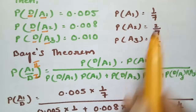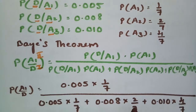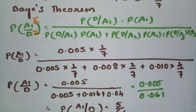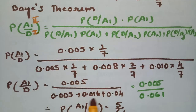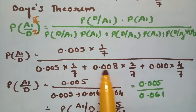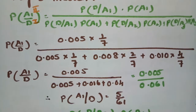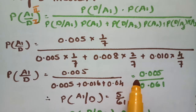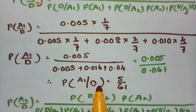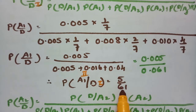So the numerator is 0.005 × (1/7), the denominator includes 0.008 × (2/7) = 0.016 and 0.01 × (4/7) = 0.04. Taking 1/7 common and cancelling from numerator and denominator, the probability of the defective pipe coming from plant A1 is 5/61.